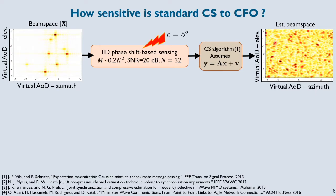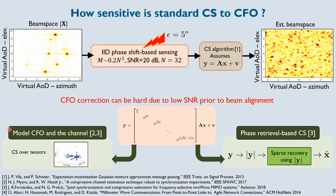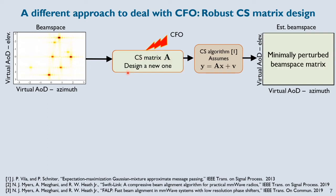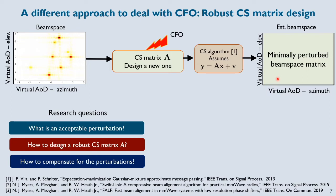Prior work has looked at this problem from two different perspectives: one is to jointly model both the CFO and the channel, and the other is phase retrieval. Today I'm going to talk about a technique that's fundamentally different from both. Linear compressed sensing is very sensitive to CFO errors with the common random phase shift based acquisition technique. What if I change the compressive sensing acquisition technique — equivalently the CS matrix — to a new one, such that the output is a minimally perturbed beam space version? This brings in new problems: how do I define perturbations, how do I minimize them, and how do we design the sensing matrix A?